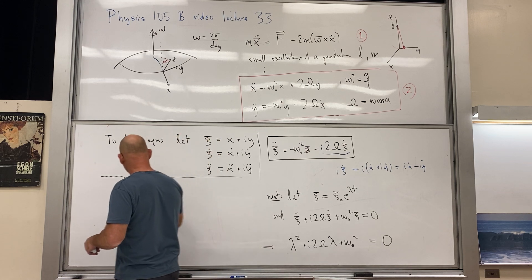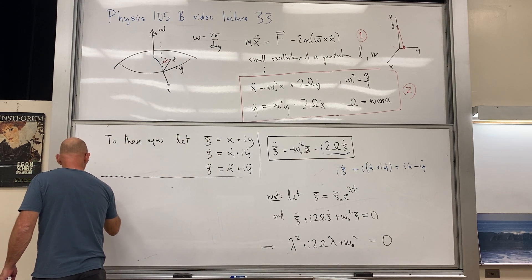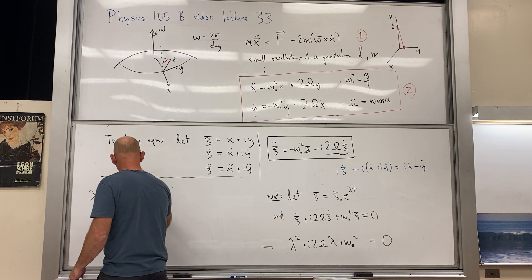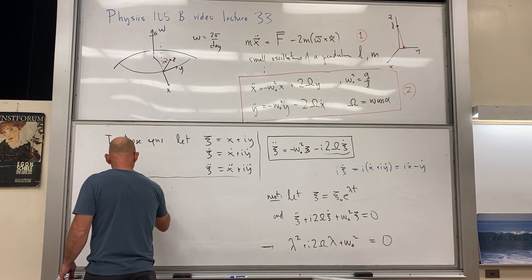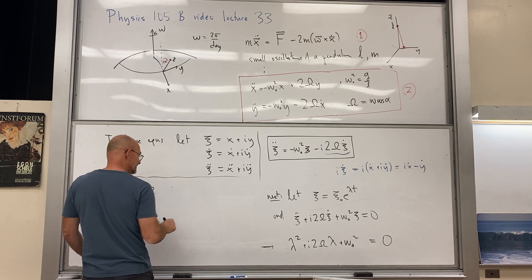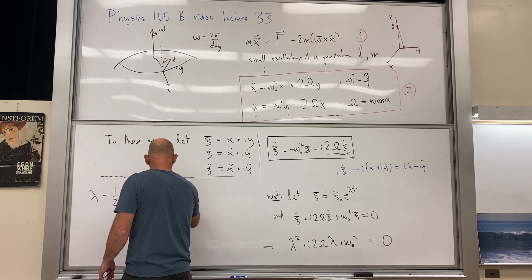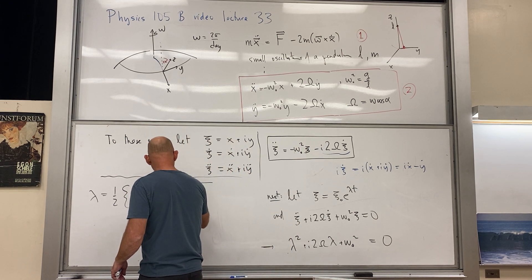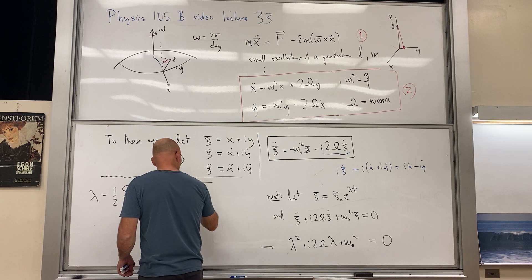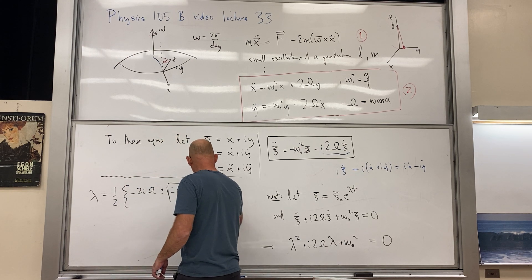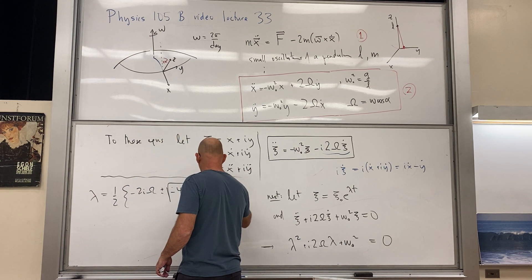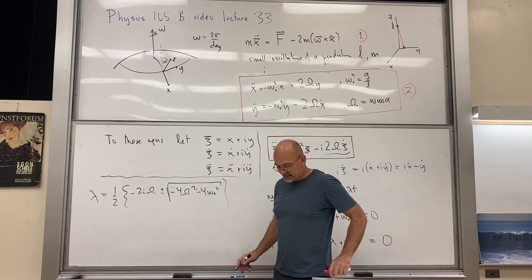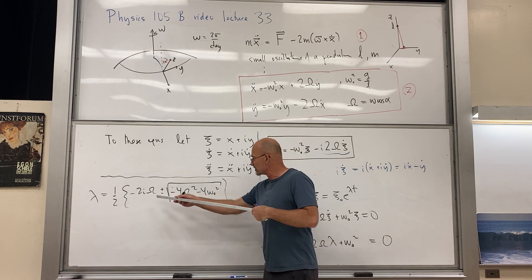Applying the quadratic formula, lambda equals one-half times the quantity negative 2i·Omega, plus or minus the square root of negative 4·Omega-squared minus 4·omega-naught-squared. We need to pull out an i from under the square root.